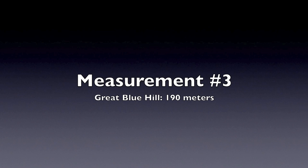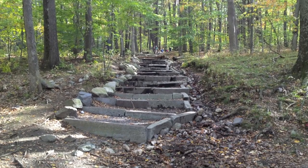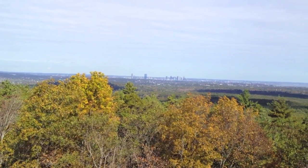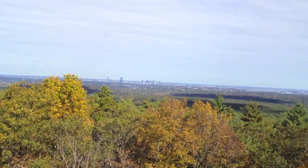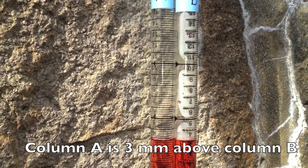For our final measurement, we drove about 20 miles south to the Great Blue Hill. After climbing for about a mile and a half, we reached the top, with our stunning views of Boston and the ocean. Here, we get our lowest measurement yet. Column A is actually 3 millimeters above column B.